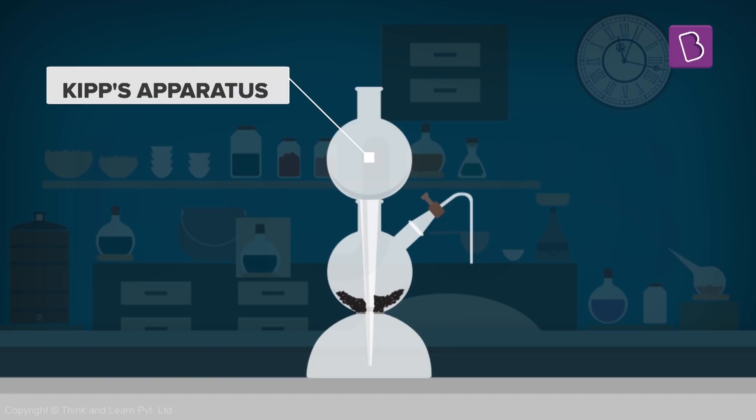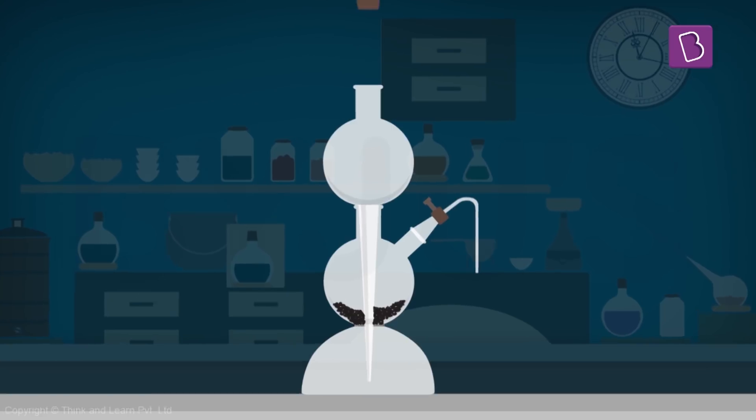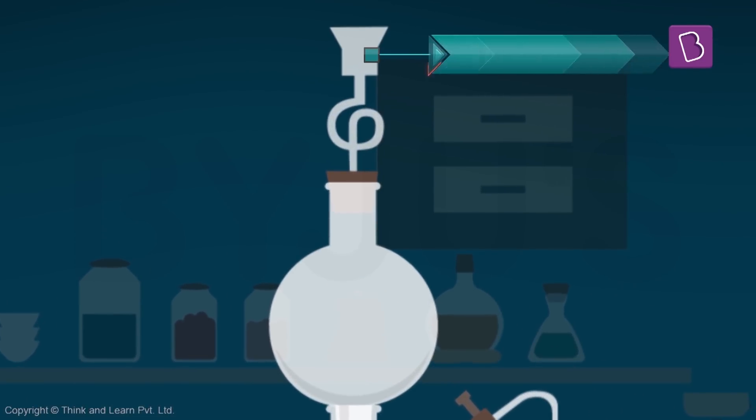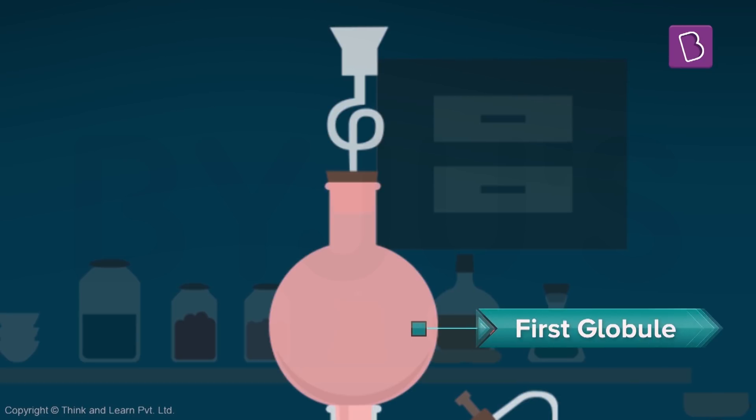So let's check out this apparatus called Kip's apparatus. I have a tiny thistle funnel on top. This opens up into a big globule. Let me call this the first globule.